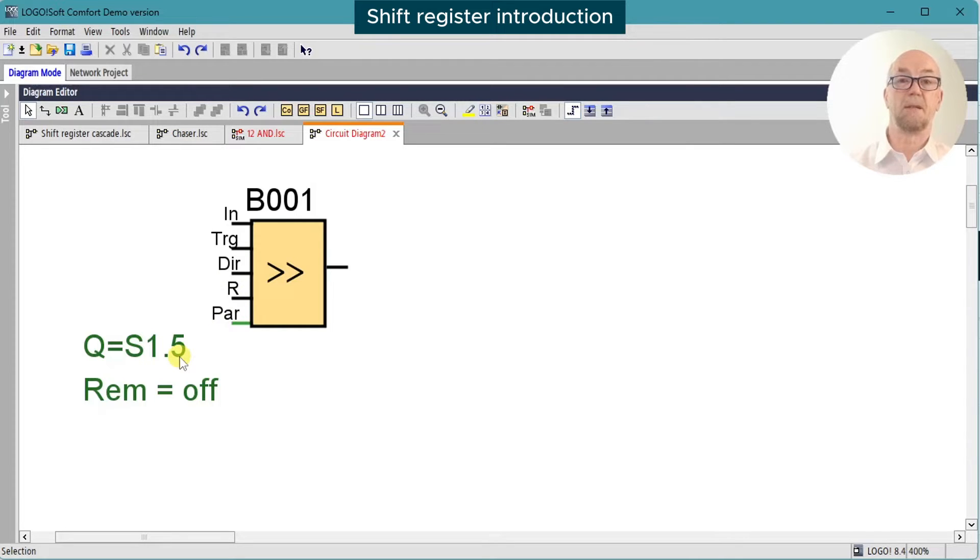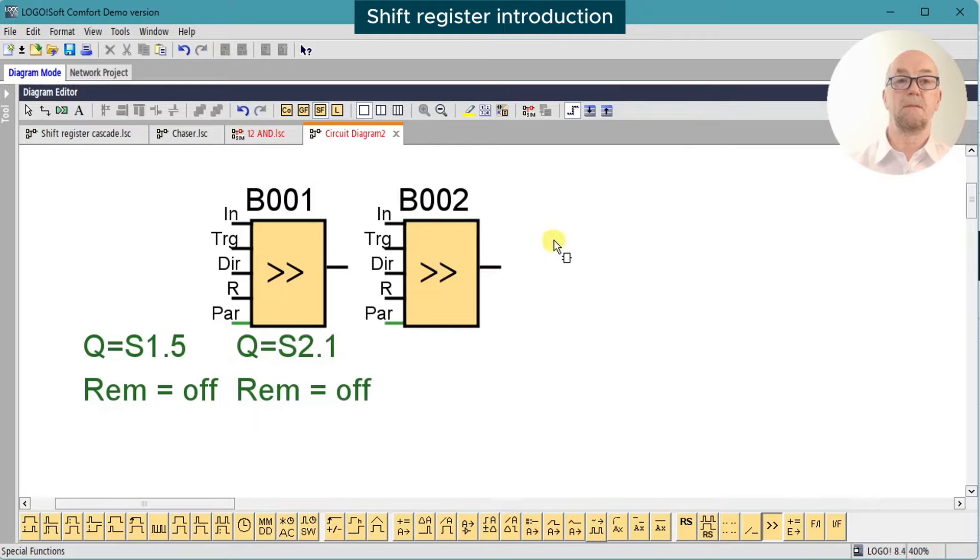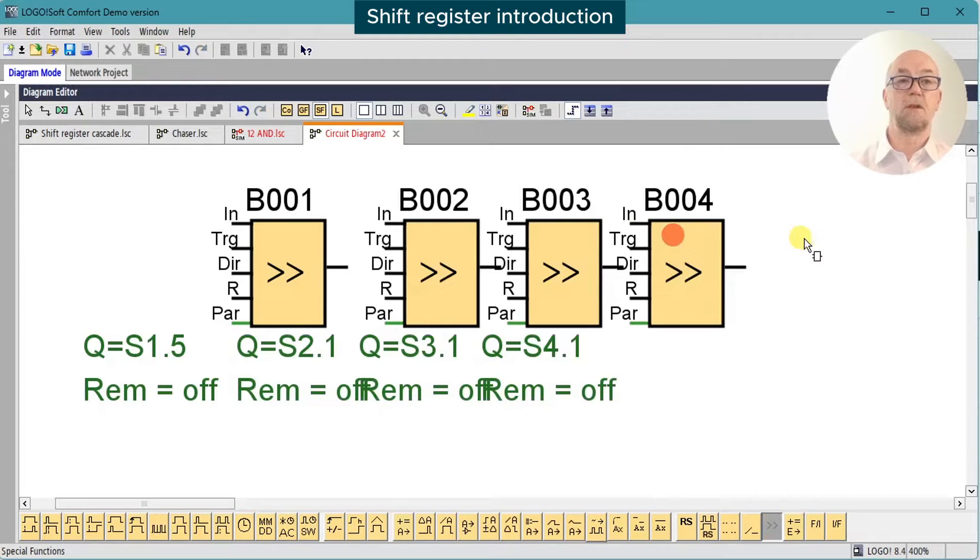Here you can see that it has been set to bit 1.5. In Logo version 8.3, you can have four shift registers: two, three, four, and then you're not allowed to insert anymore.